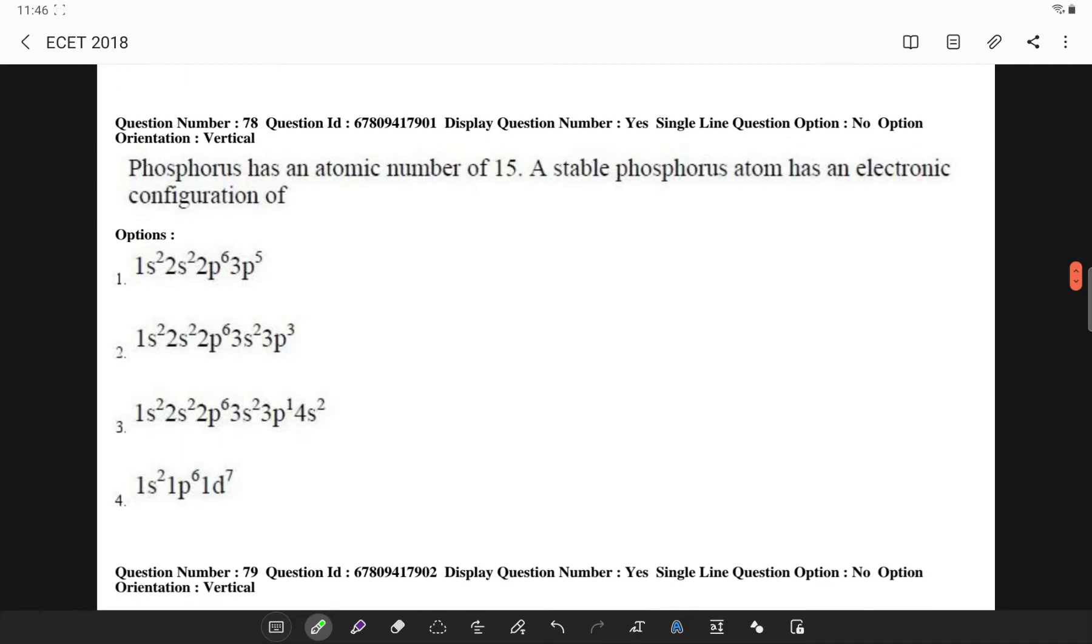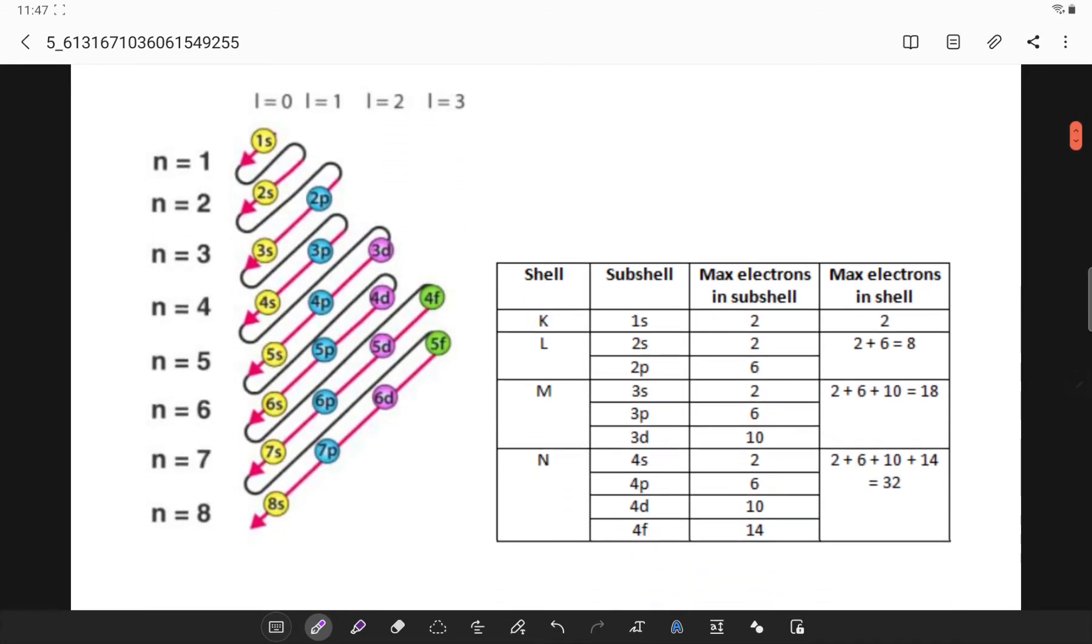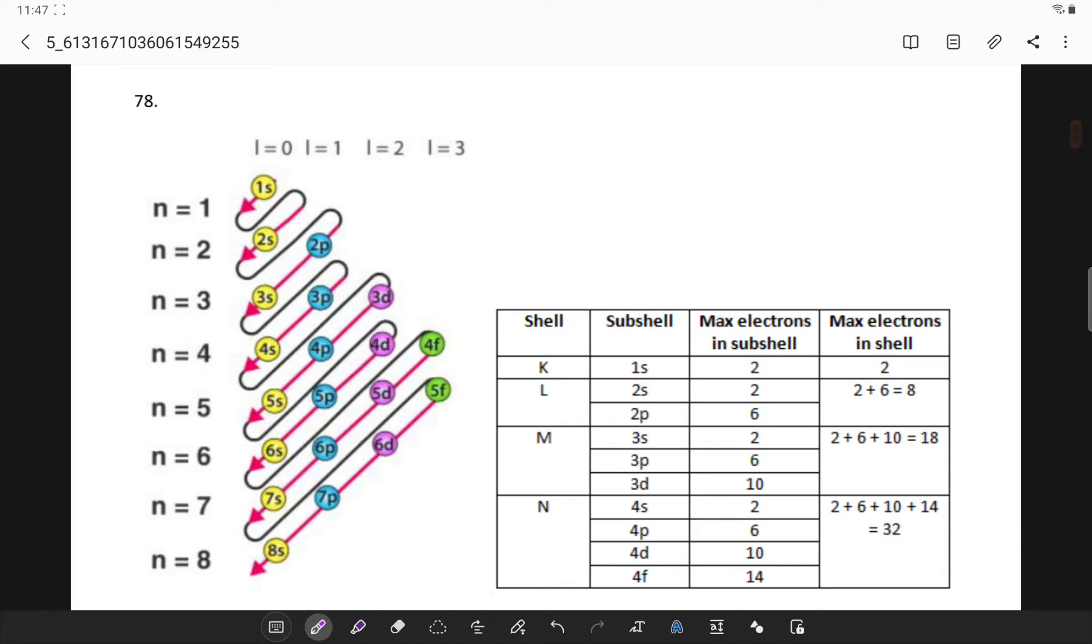Phosphorus has an atomic number of 15. He is asking us the electronic configuration. So here Z is 15. And if we see the electronic configuration diagram, I can simply get it. So here Z is 15. Therefore, 1s² 2s² 2p⁶ 3s².